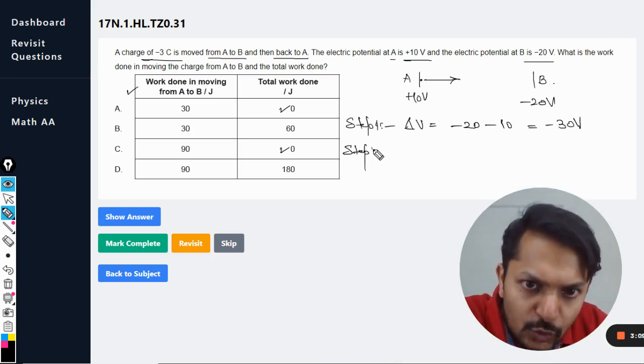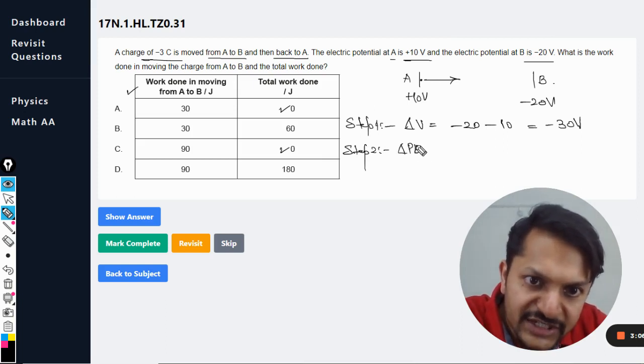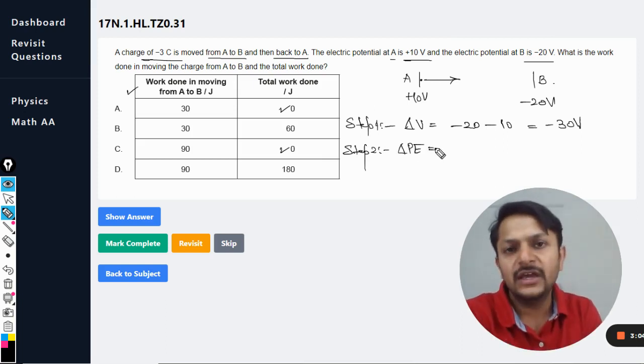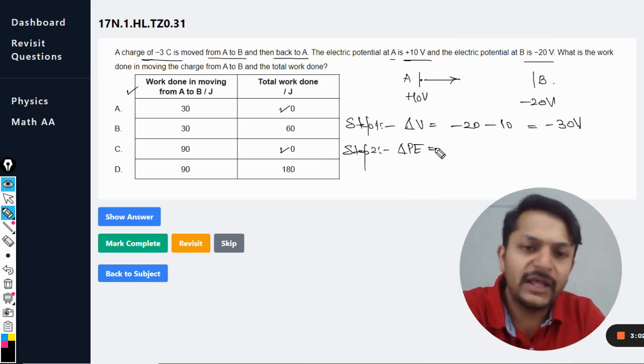Step number 2: We can find the total change in potential energy and we know the relation, you multiply it with the charge.